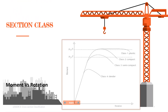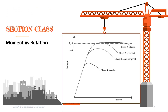The differences in behavior of these four classes may be seen in a figure which illustrates the moment-rotation behavior of the cross section. Class 1 is plastic cross sections, Class 2 is compact cross sections, Class 3 is semi-compact cross sections, and Class 4 is slender cross sections.